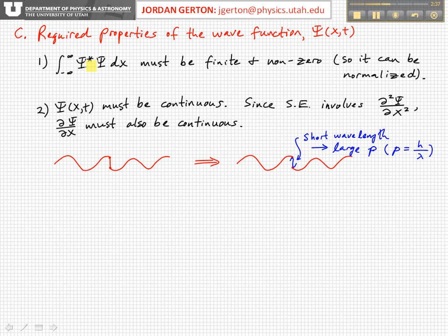for an arbitrary wave function ψ, the integral of ψ*ψ dx must be finite and non-zero, because otherwise you can't actually normalize it. You can't set this integral equal to one if it's not finite. This puts some restrictions on the forms of wave functions.